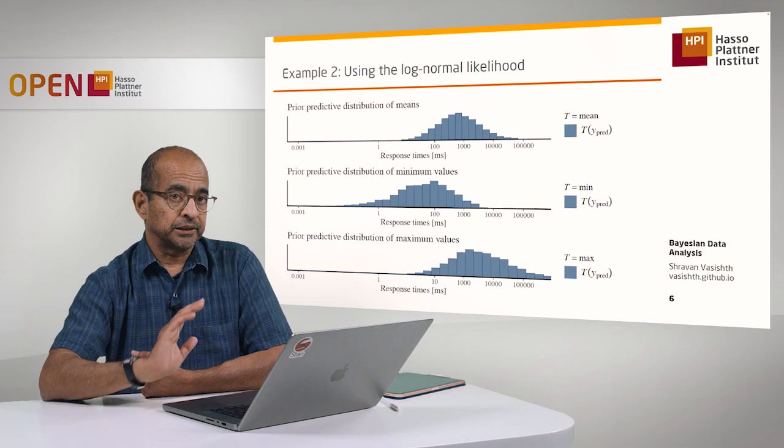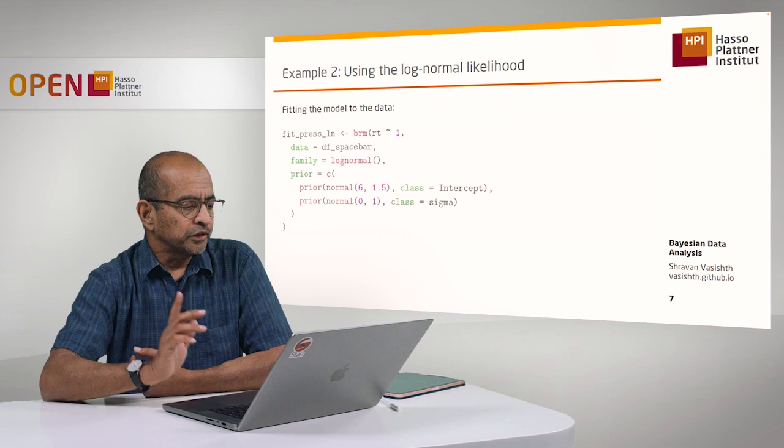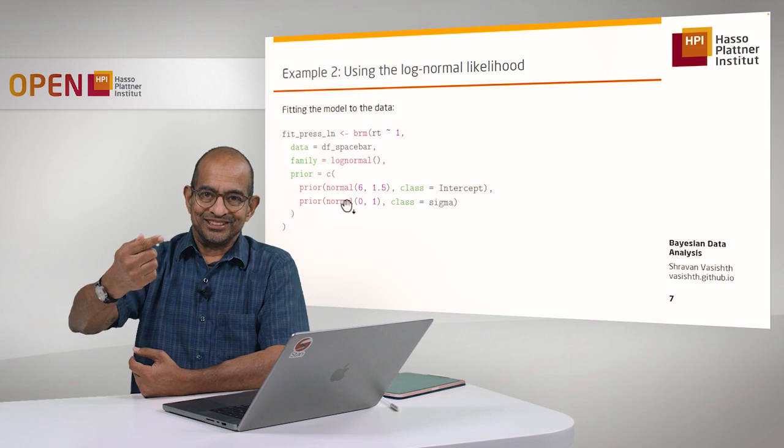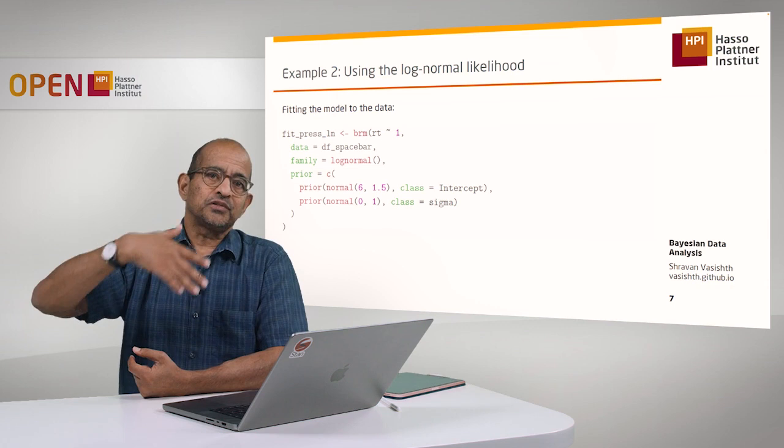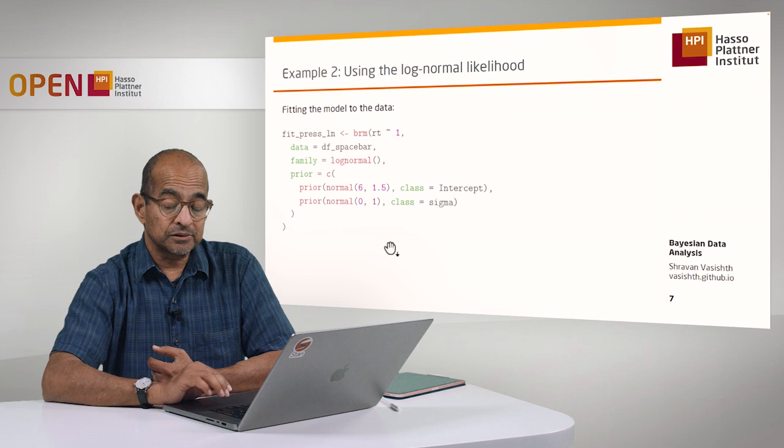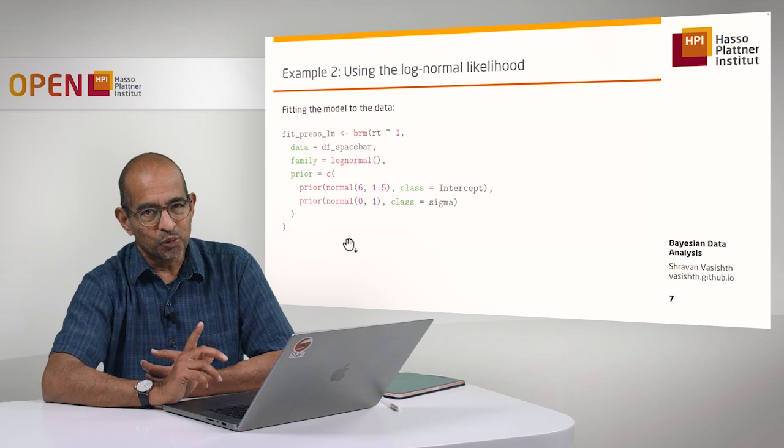they are a huge improvement over the uniform prior-driven prior predictive distributions that we saw earlier. Relatively speaking, this is a huge improvement, but we could do better. Anyway, that was the prior predictive data using the brm function. What's cool about this BRMS package is that you can produce most of the functionality that you would have to do by hand in R or some other tool through the function brm. This is a very useful package for doing quick data analysis, as long as you know what you're doing.